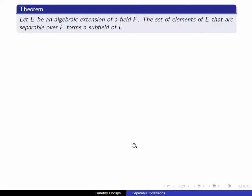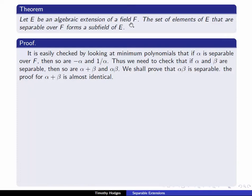Now let's use this lemma to prove our main theorem. The theorem says: if E is an algebraic extension of F, then the set of elements of E that are separable over F forms a subfield of E. Again, this result is trivial in characteristic zero since everything is separable, so we assume F has characteristic p. The first step is to show that if alpha is separable, then so are minus alpha and one over alpha — this is a fairly easy exercise using minimum polynomials, left as an exercise. We concentrate on showing that if alpha and beta are separable, then so are alpha plus beta and alpha times beta.